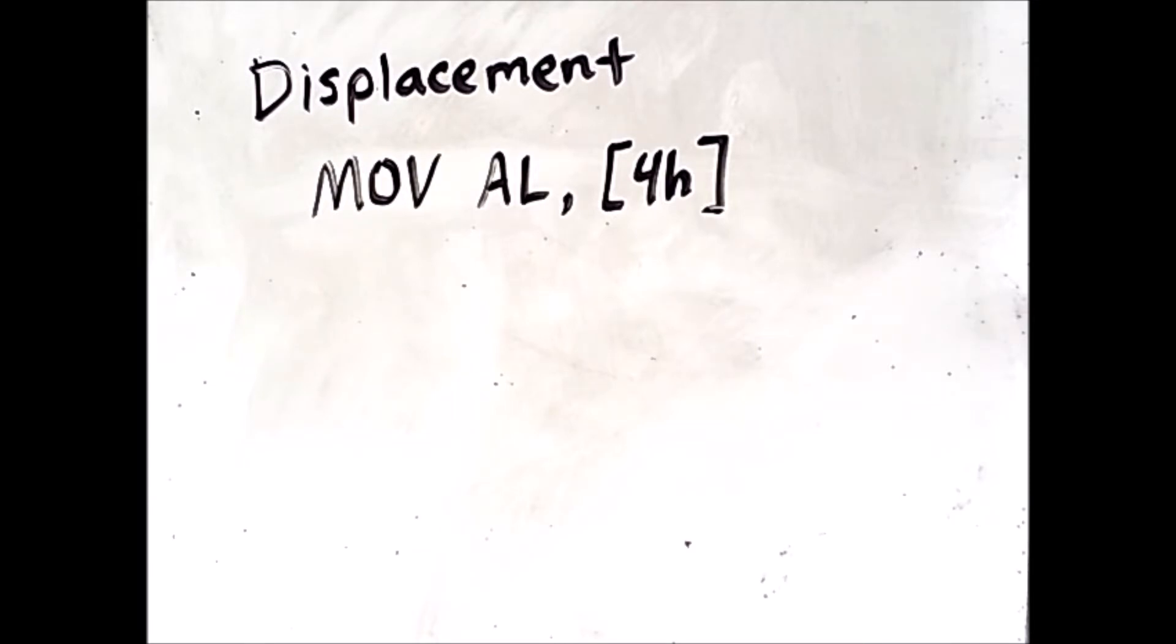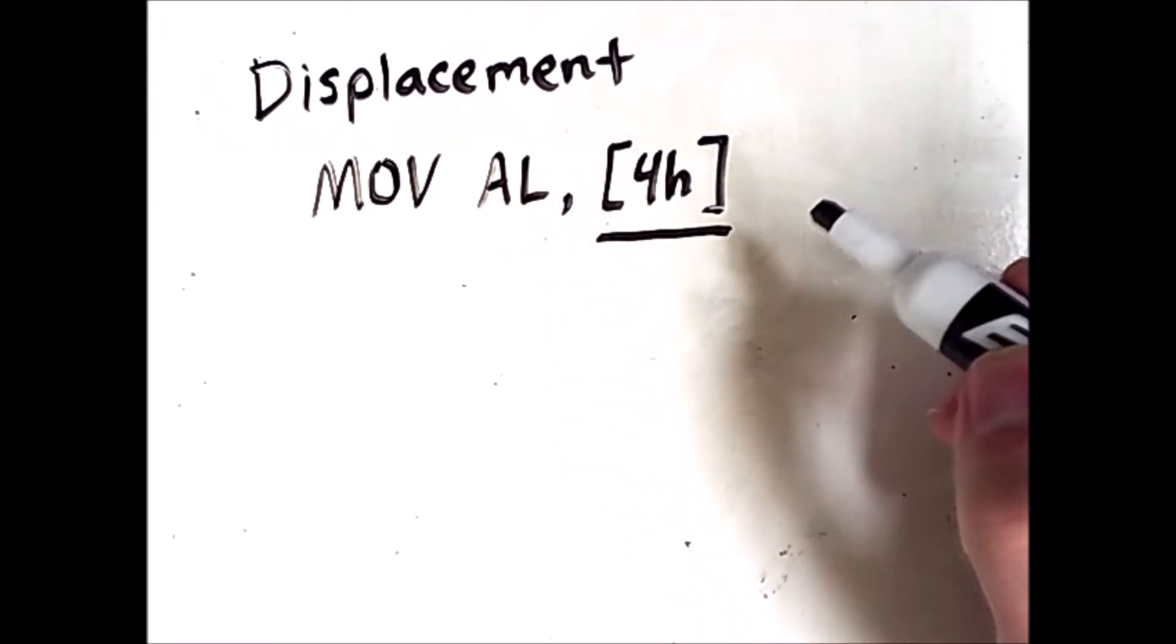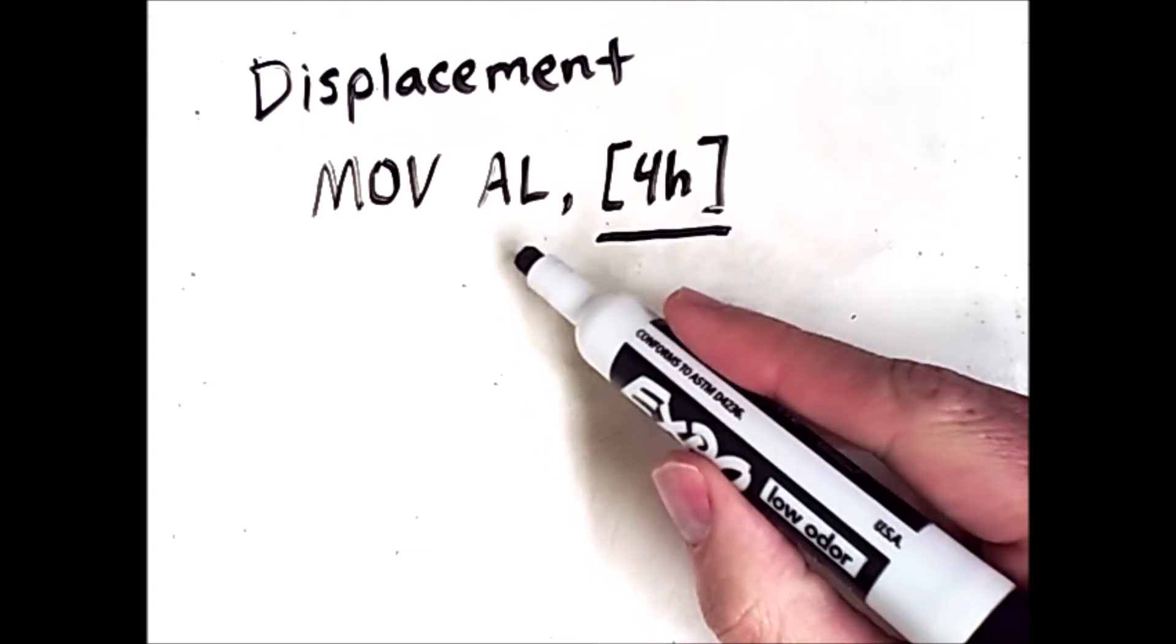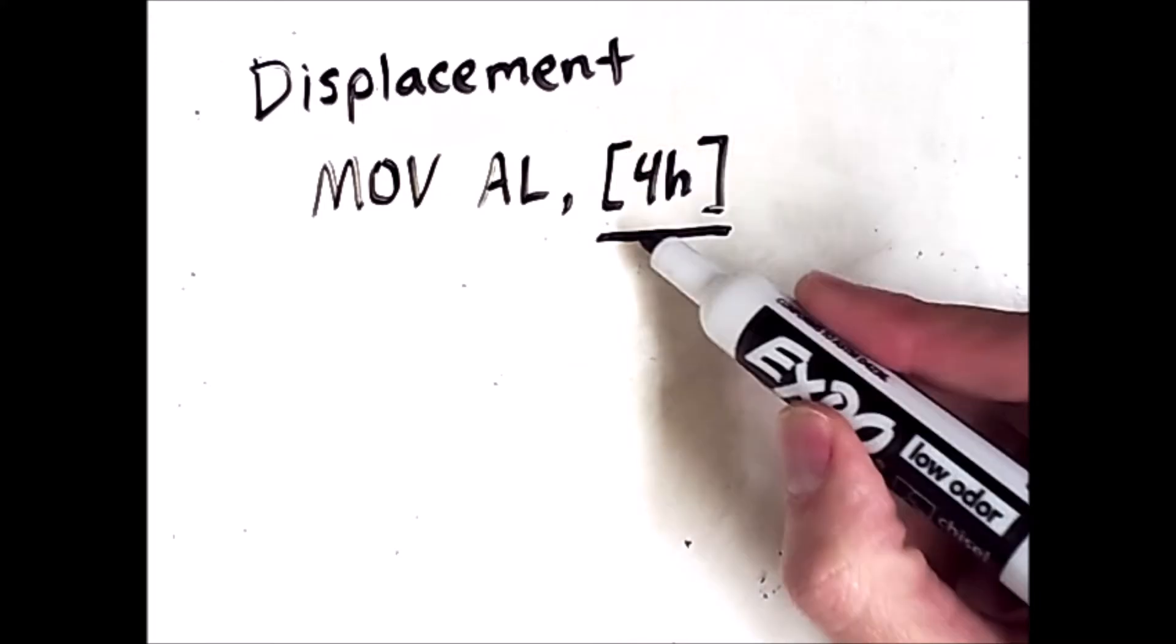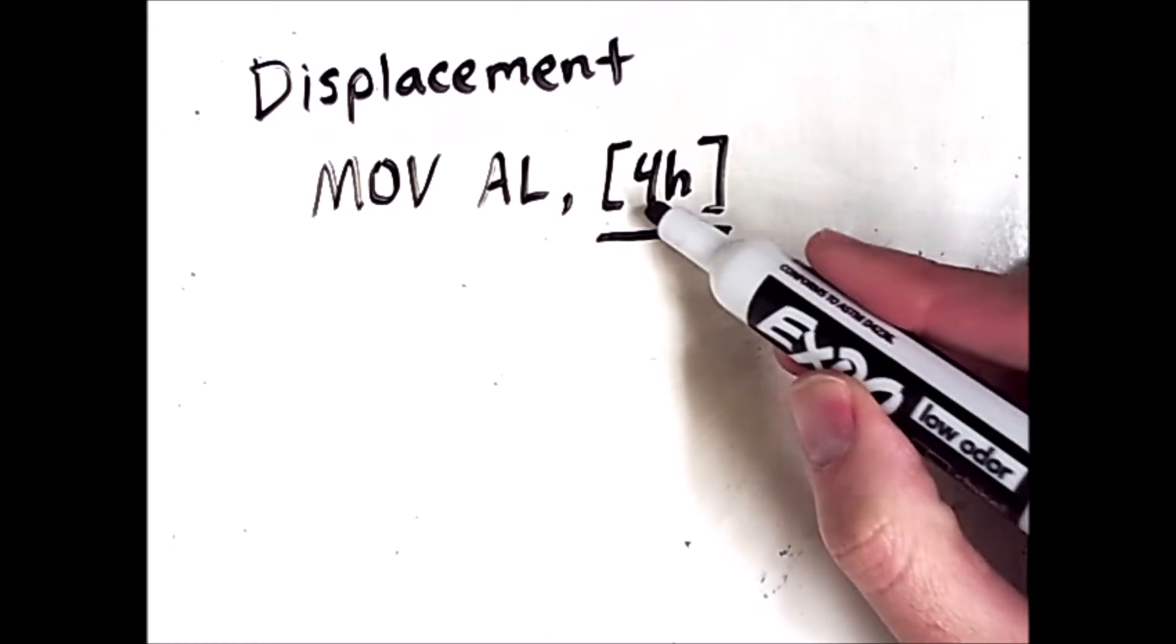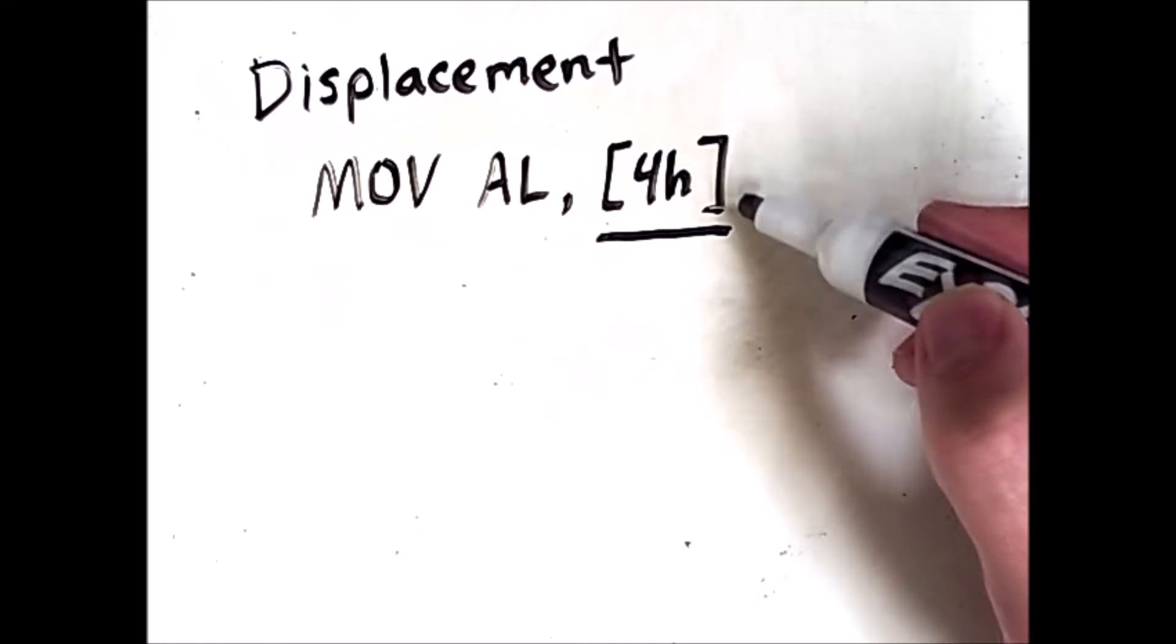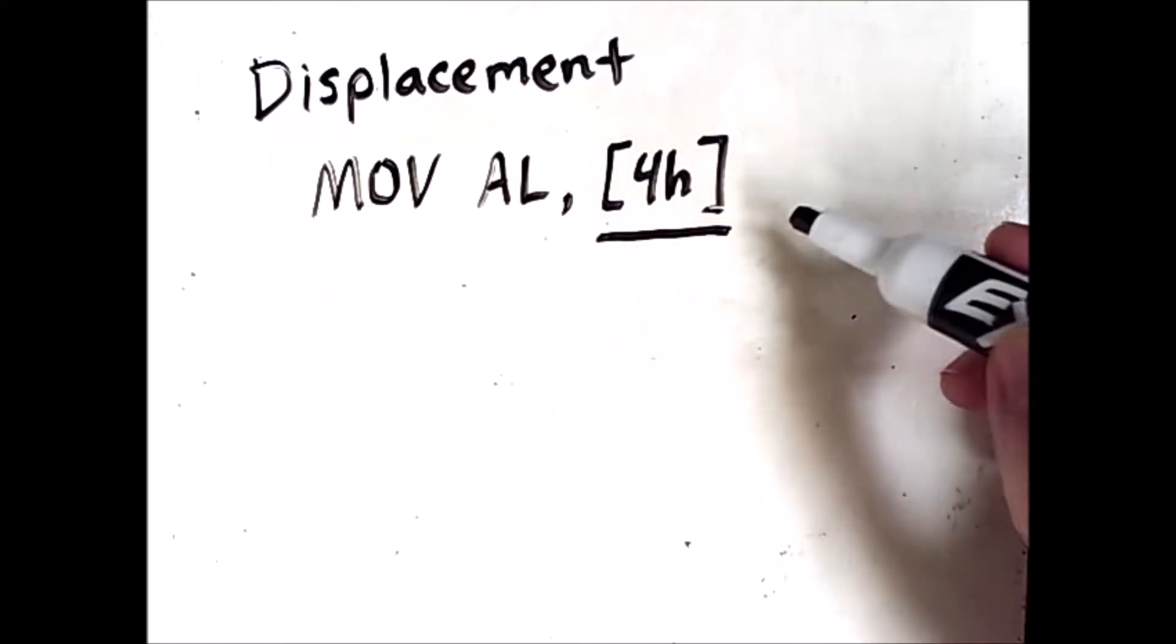This simple move command uses displacement addressing with respect to this operand. AL is a register in x86. This register is simply addressed using register addressing. But what does this 4h inside of square brackets mean? Well, the h indicates that we have a hex value, so this is simply 4 in hex, which is 4 in general. But these brackets are what mean that we are discussing a memory address.